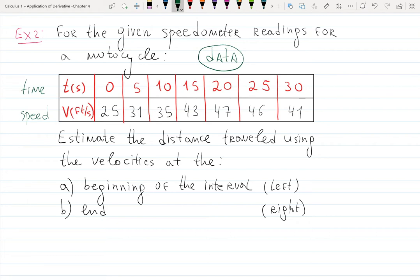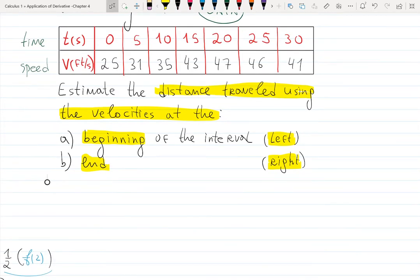Can we still approximate? Can we still estimate the distance traveled by the motorcycle using the velocities in the table? With the same idea of left endpoints and right endpoints, we can use the beginning of each interval and the end of each interval. Yes, we can do it, and this is what we're talking about here.